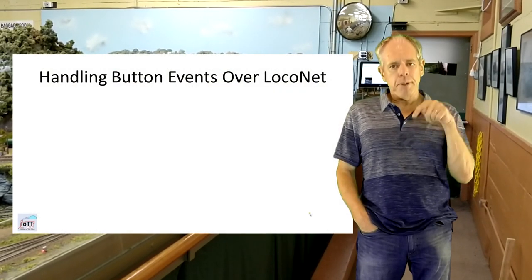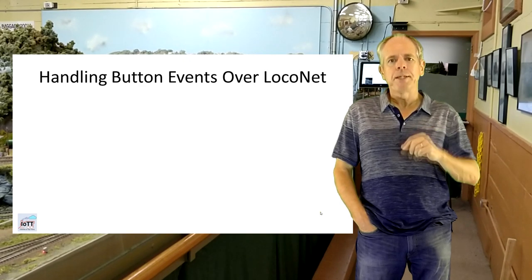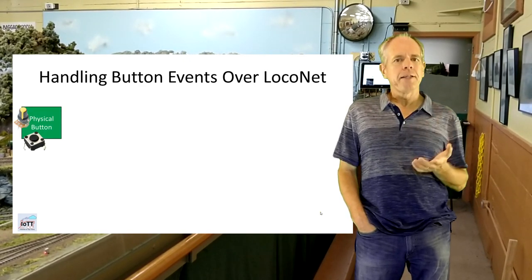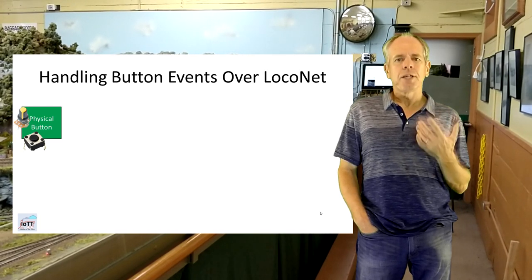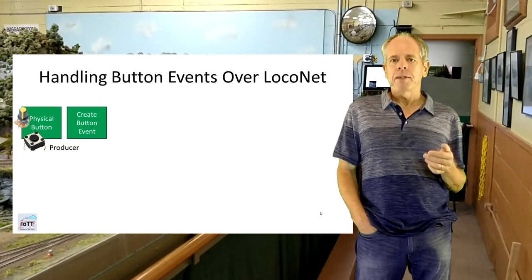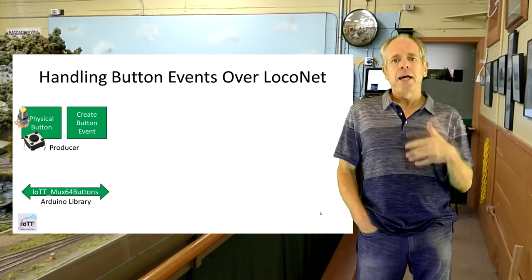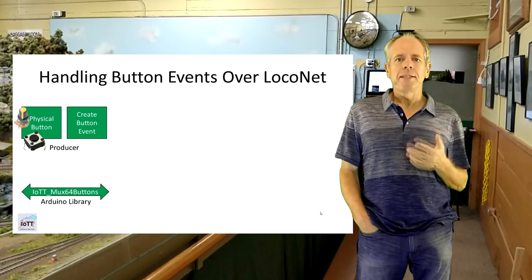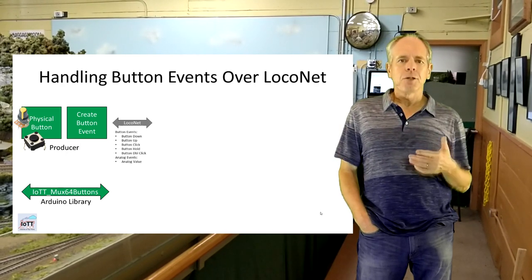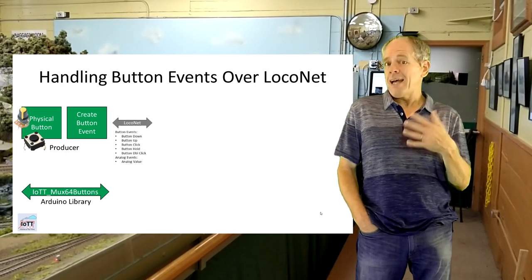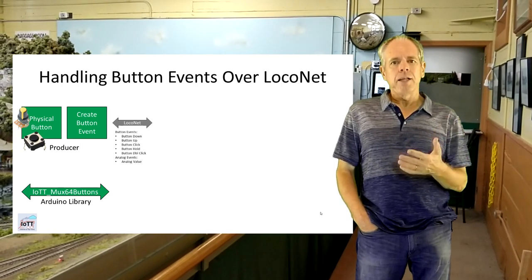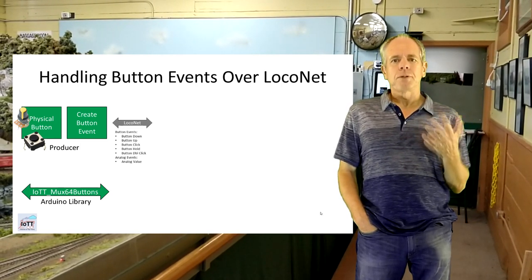Let me explain the function of each library and how they work together. The process starts with the user pressing a button or turning one of the potentiometer knobs. If this happens we identify what input line is activated and generate an event. If it is a button there are five different event types: button down, button up, button hold, button clicked, and button double clicked. Each of these events is sent to LocoNet. In the case of an analog input there is only one event — analog — but with the current analog value as a parameter. On the ESP32 this is a value from 0 to 4095.